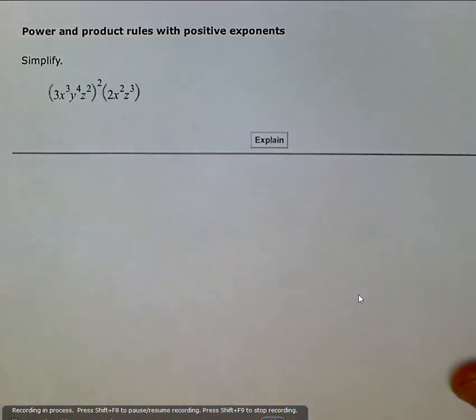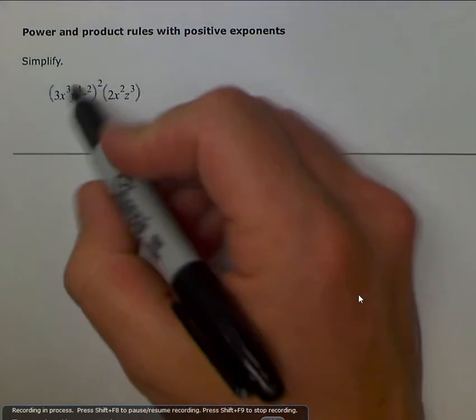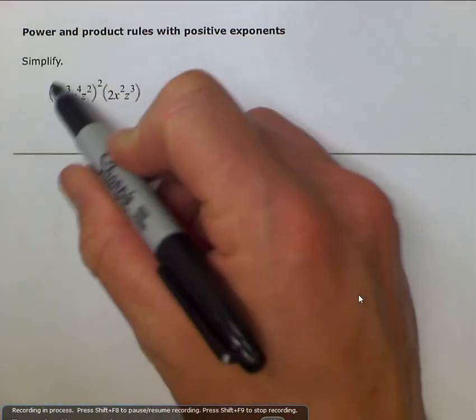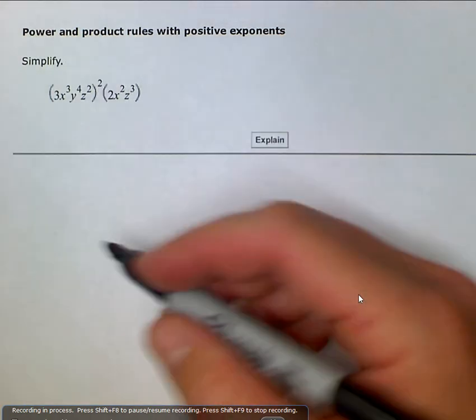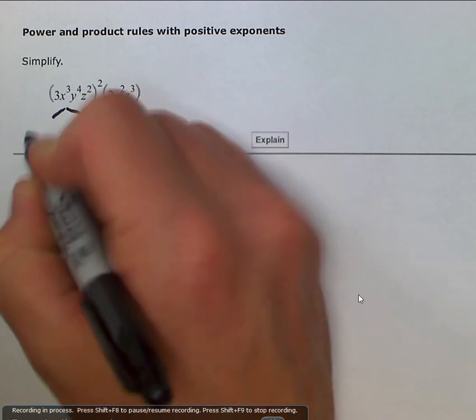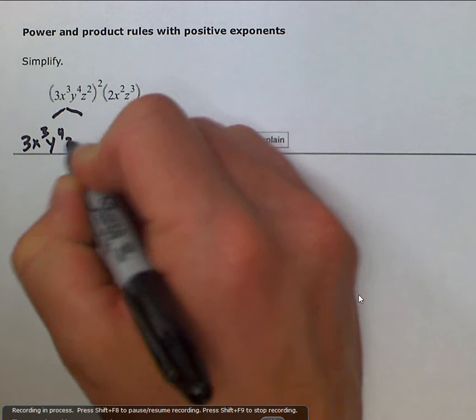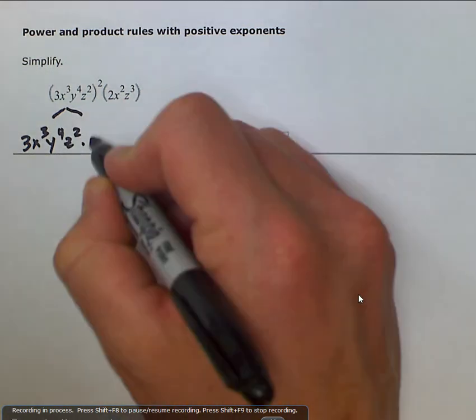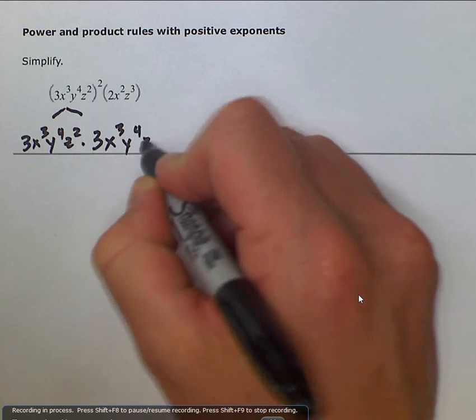And remember, what this means is it literally means that we are multiplying everything inside the parentheses times itself two times. So we could rewrite this as 3x to the third y to the fourth z squared times 3x to the third y to the fourth z squared. That's what it means.